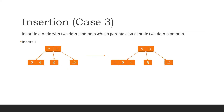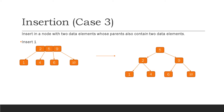The last case for insertion is when we want to insert in a node with two data elements whose parent also contains two data elements. For instance, if we want to insert 1, since 1 is less than 5 we move to the left subtree, and since 1 is less than 2 and less than 4, we create a temporary node. We split the node, moving the middle value 2 to the parent node, so 1 and 4 become individual nodes. We then repeat the same process with the parent node, moving 5 upward and splitting so that 2 and 9 become two distinct nodes. In this way, the tree's height grows upwards, which is why it's easier to balance height in 2-3 search trees.